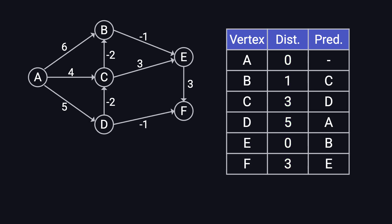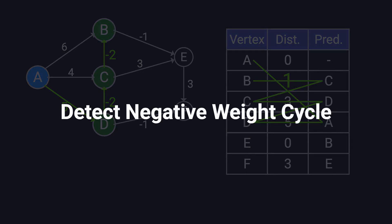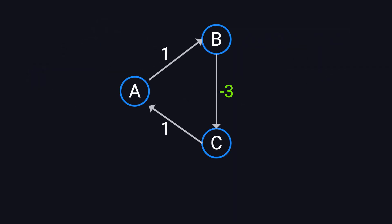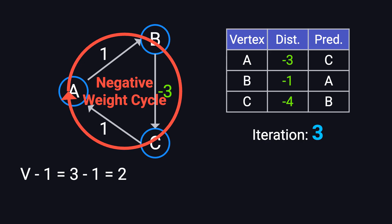Using the predecessor nodes, we can reconstruct the shortest paths. For example, the shortest path from A to B is A to D to C to B, with a total distance of one. Now, how does the Bellman-Ford algorithm detect negative weight cycles? Imagine a graph with three nodes A, B, and C. The edge from A to B has a weight of one, from B to C has a weight of minus three, and from C to A has a weight of one. After V minus 1 iterations — two in this case — the shortest path distances should have stabilized. But if we run one more iteration and notice distances are still decreasing, it means the graph contains a negative weight cycle, where distances keep getting smaller indefinitely.